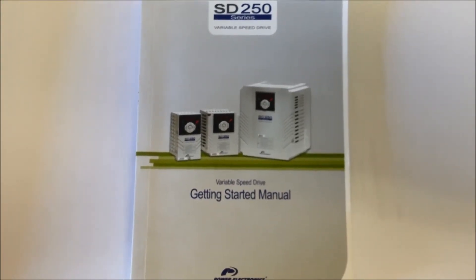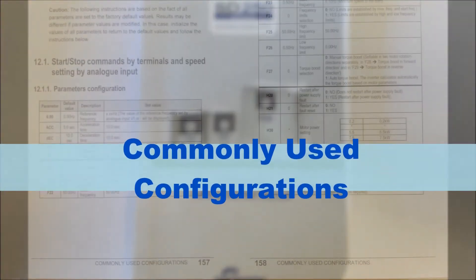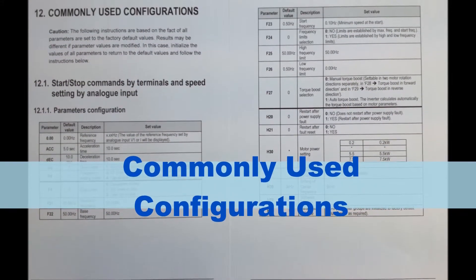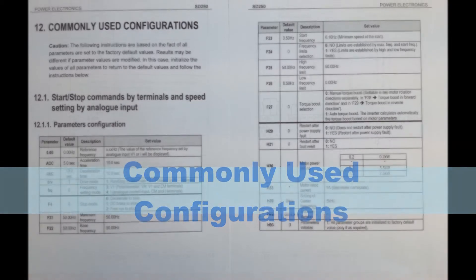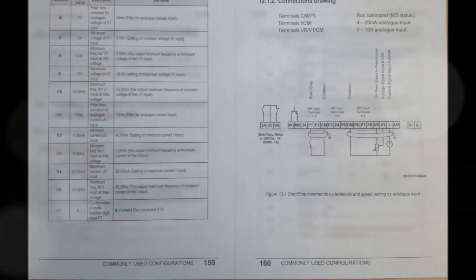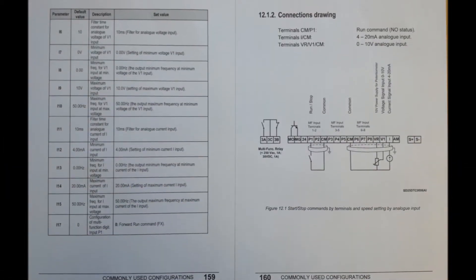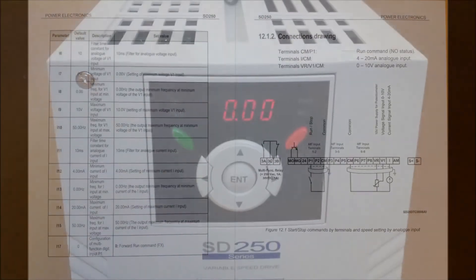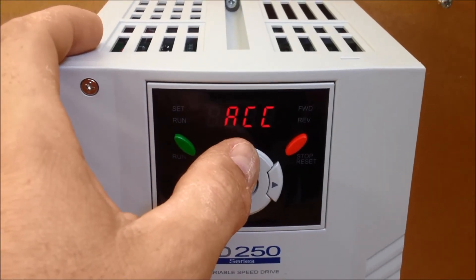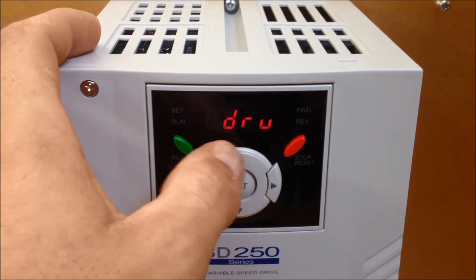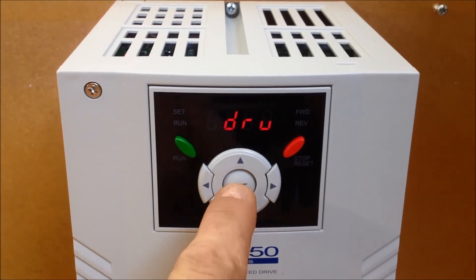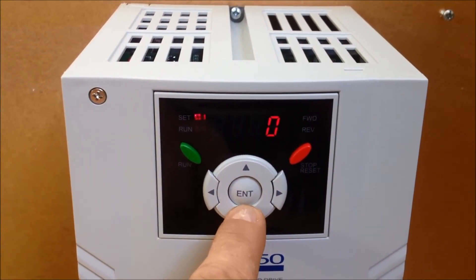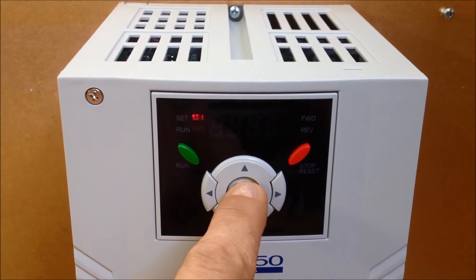In all Power Electronics manuals, you will find various commonly used configurations that can help you in all your applications. These can be found to the rear of each manual. Please see the Getting Started manual for information and description of parameters.